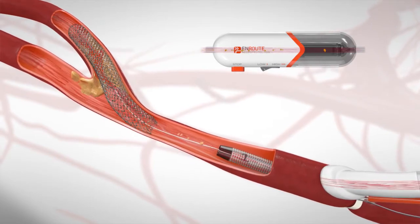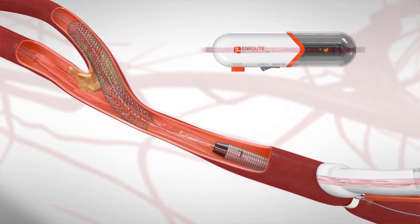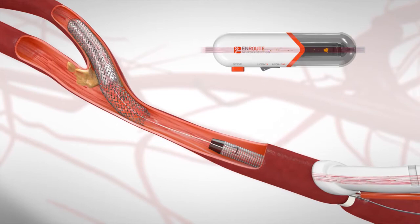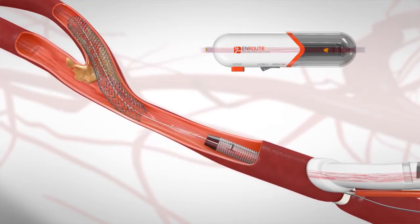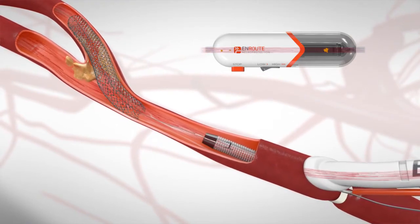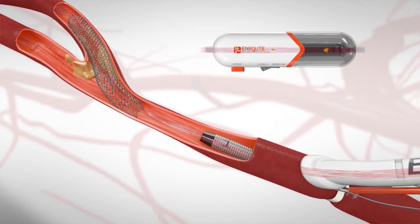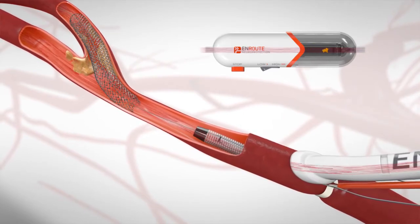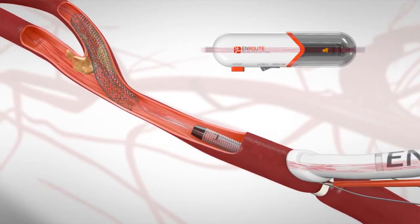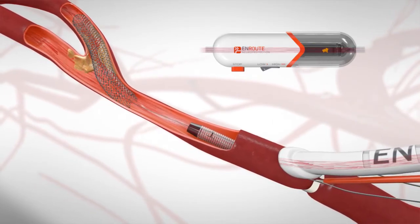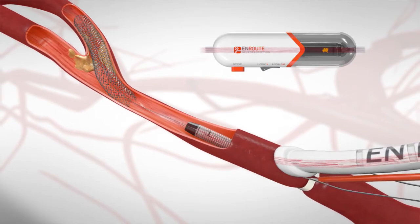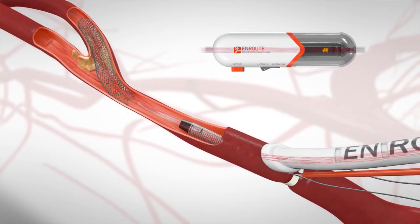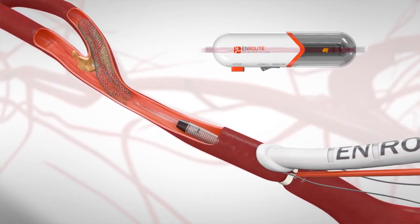Balloon catheters can also be used to further expand the stent when appropriate. The delivery of these therapeutic devices can disrupt the plaque, causing dangerous debris to come loose. The enroute transcarotid neuroprotection system is designed to capture and filter that debris throughout the procedure to prevent a procedural stroke.